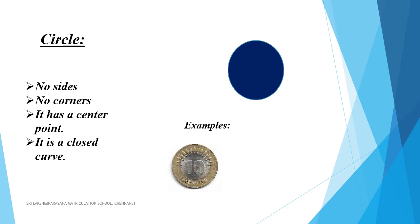Now, let us list out the things around us that are circle in shapes. Some examples: coins, clock. Students, can you list out some more examples?